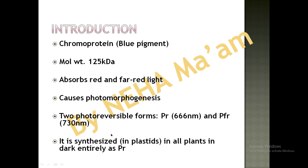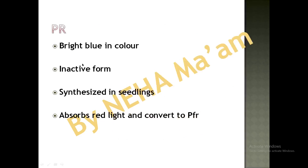Phytochrome is synthesized in the plastids, mainly chloroplasts, in all plants under dark conditions. When there is a dark condition, the plant synthesizes the PR form of phytochrome inside the chloroplasts. PR is a bright blue colored protein found in inactive form. It is synthesized in etiolated seedlings — that is, dark-grown seedlings — and it absorbs red light and converts into PFR.